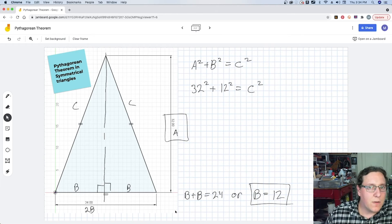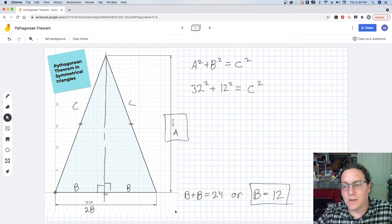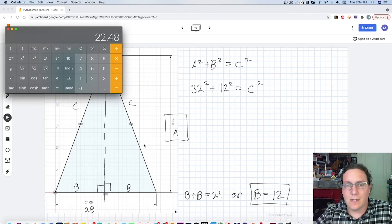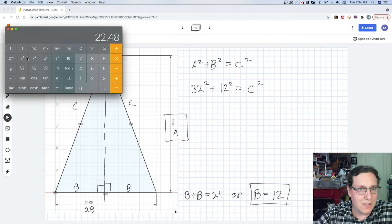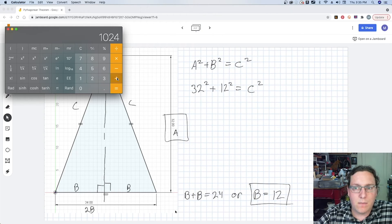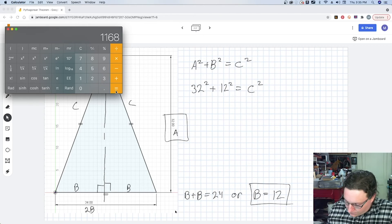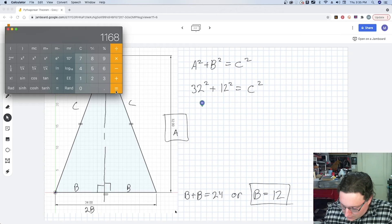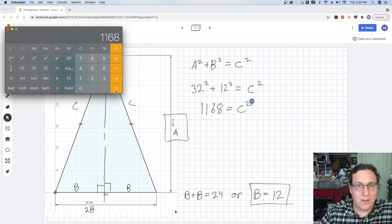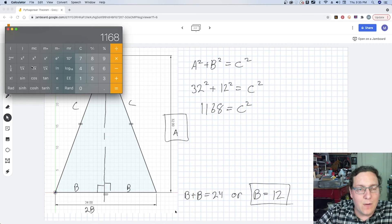This is where you're probably breaking out your calculators. I'm using a scientific calculator that has the square value. As always, clear it out. 32² + 12² equals 1168. I'm just jotting that down in case I lost it, and then we find the square root.